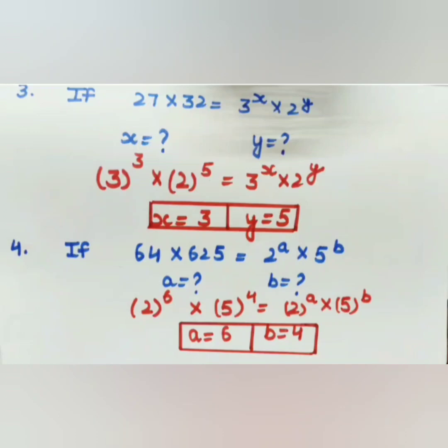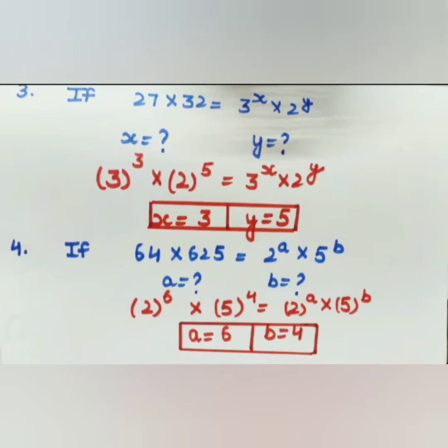Moving on to question 4, which follows the same concept as question 3 and is your practice question. If 64 into 625 equals 2 to the power of a into 5 to the power of b, find the values of a and b. We will apply the same method — express each number in exponential form and make the bases the same, then find a and b. The answer has been provided for your convenience.